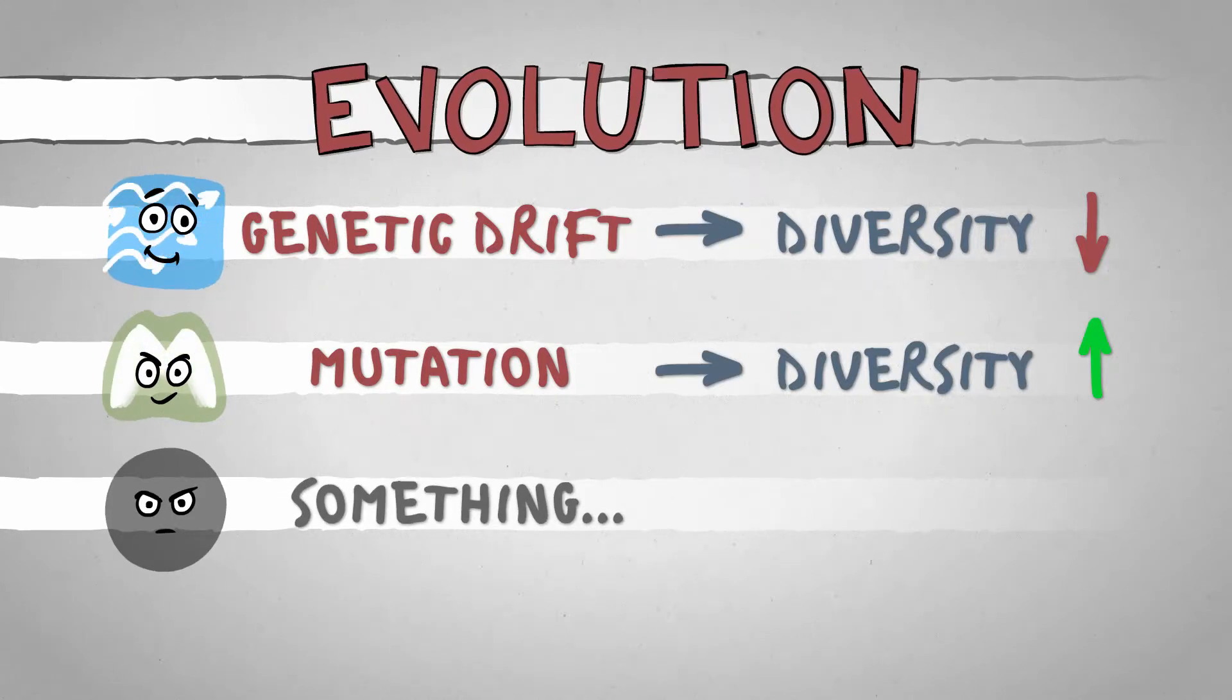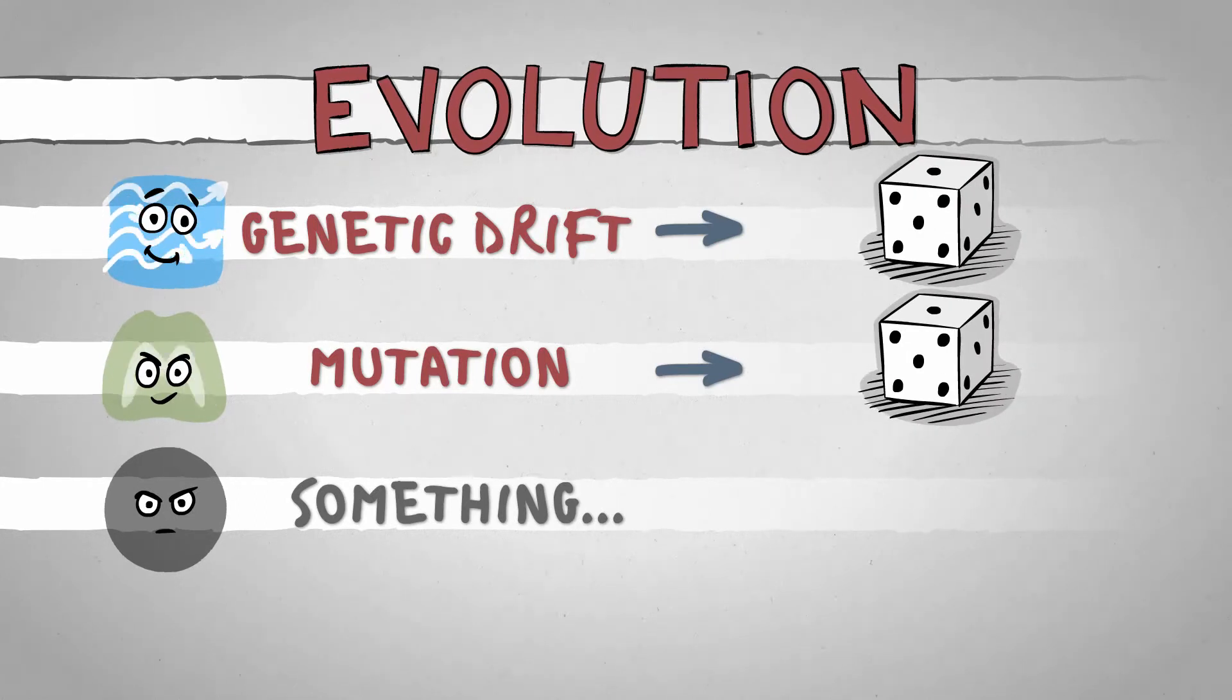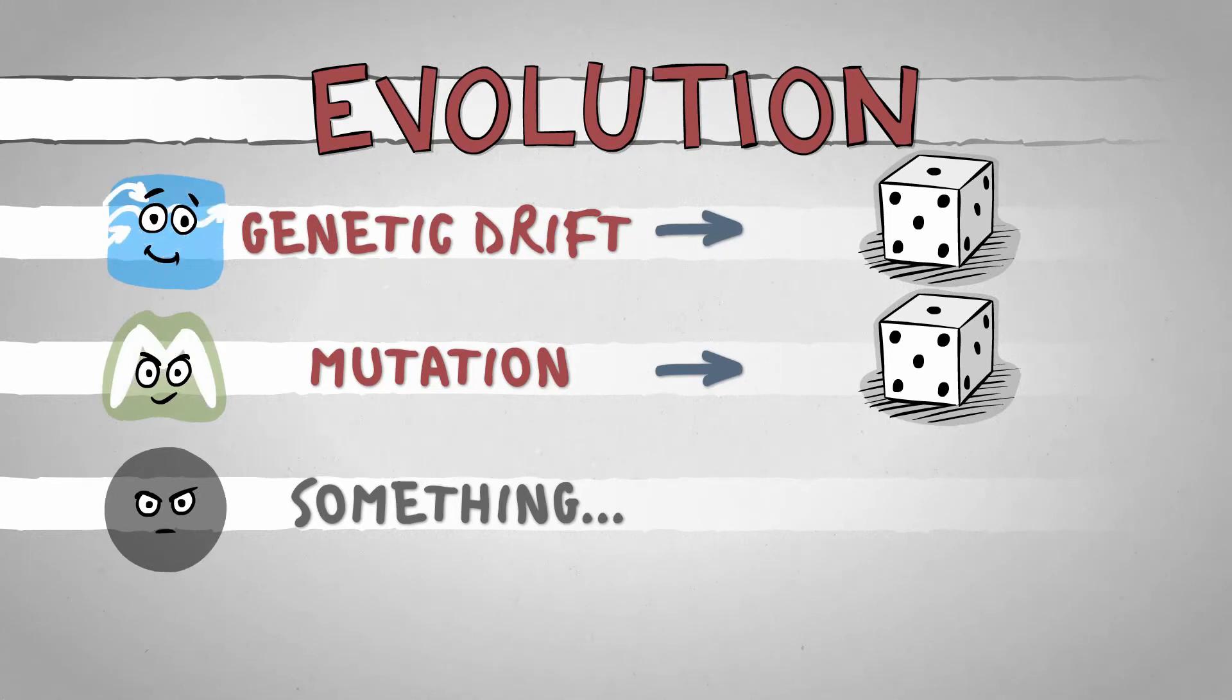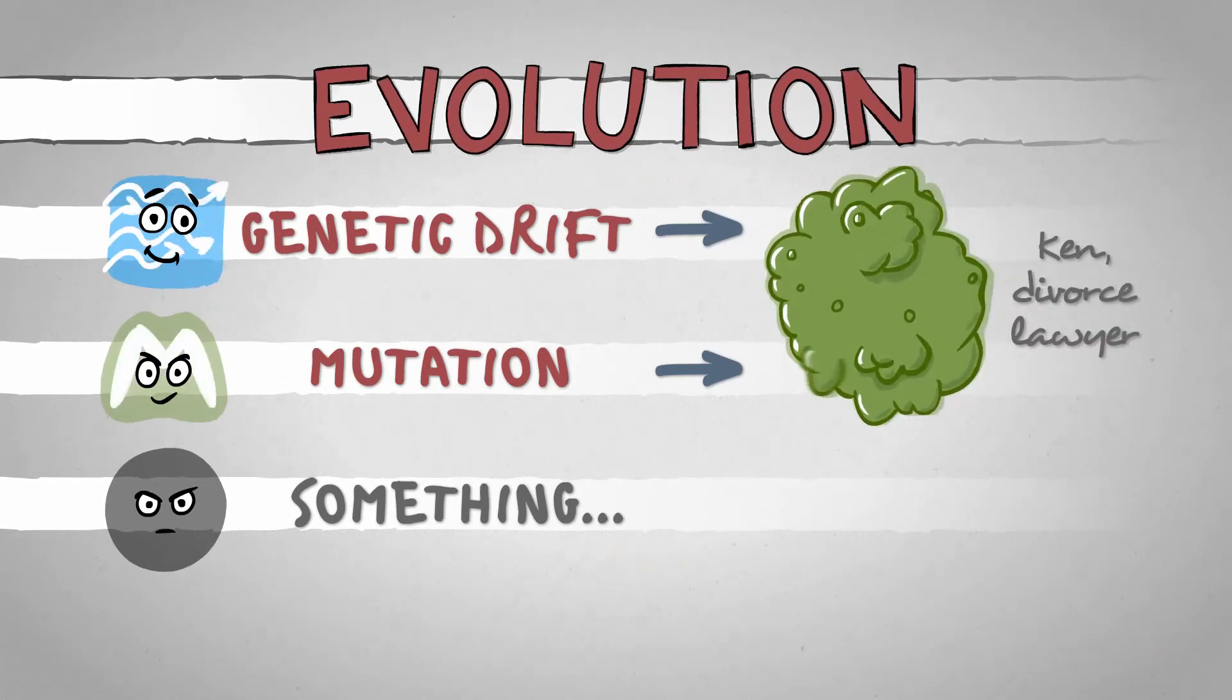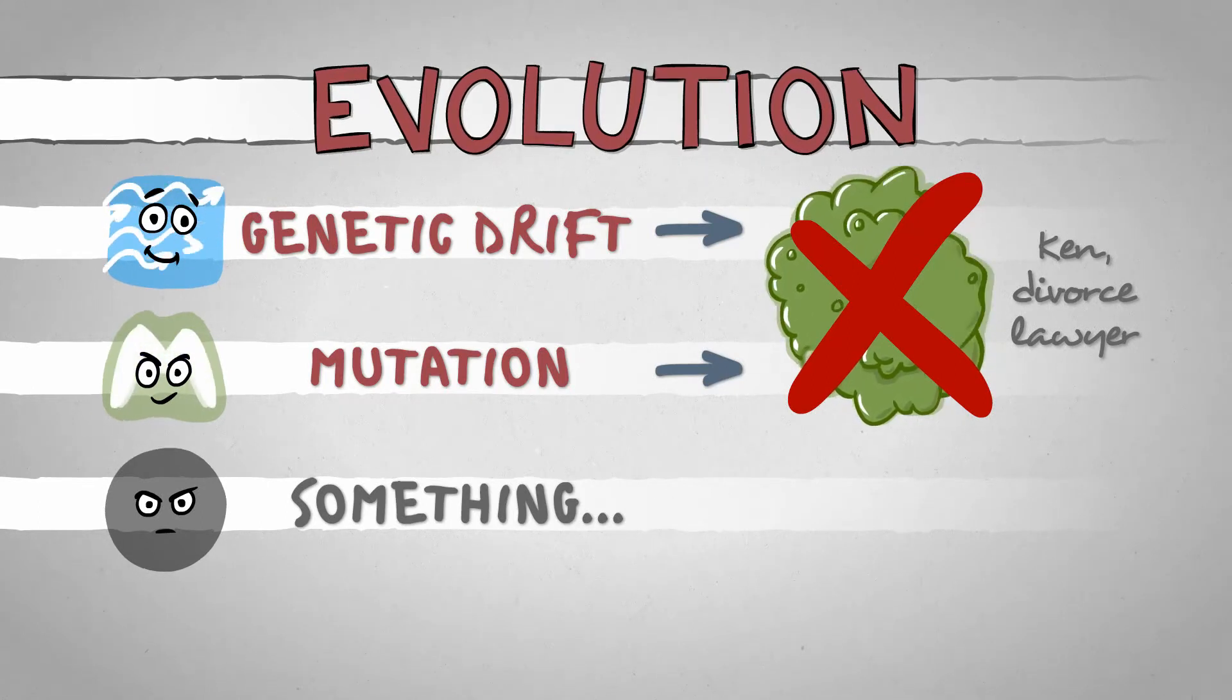But something's still off. Both mutation and genetic drift are totally random. If it was up to them, we'd all be chaotic, structureless blobs of blech. But this is not the case. Life on Earth is surprisingly harmonious.